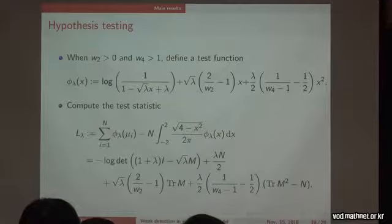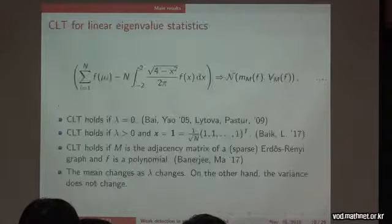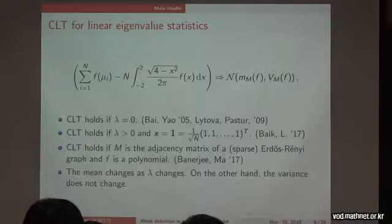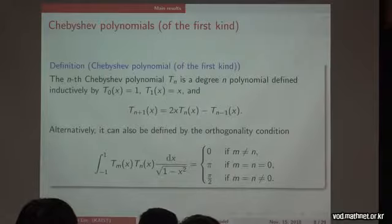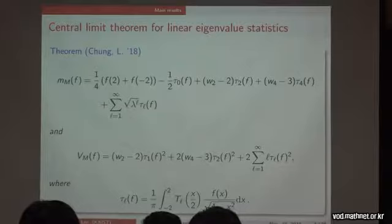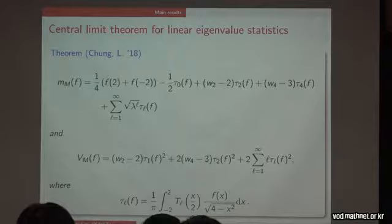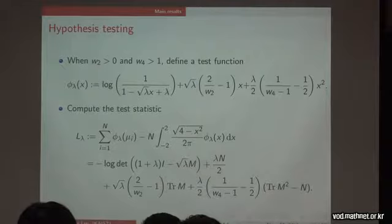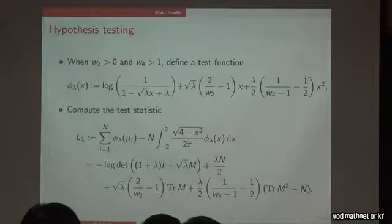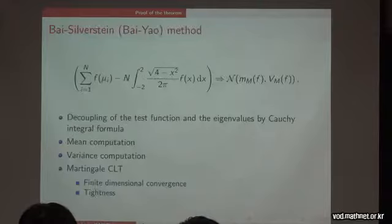Another question: what if f is identically 1? Then both sides give n, so the result is 0 — a Gaussian with mean 0 and variance 0. That gives no information about the signal, because all the tau's become 0 and the variance is 0.